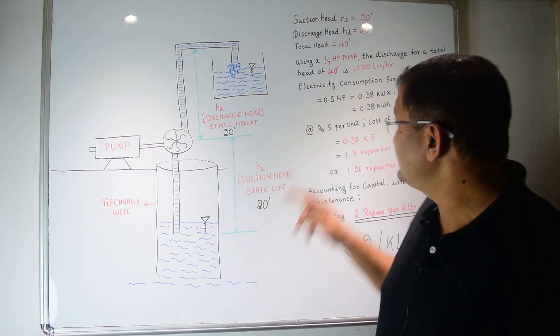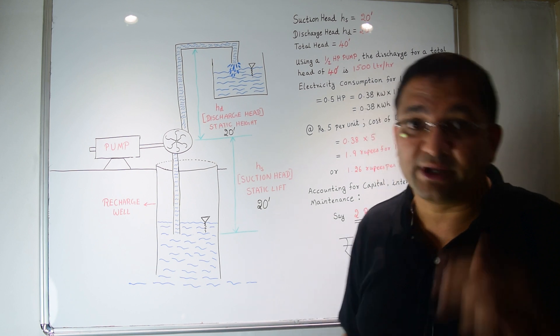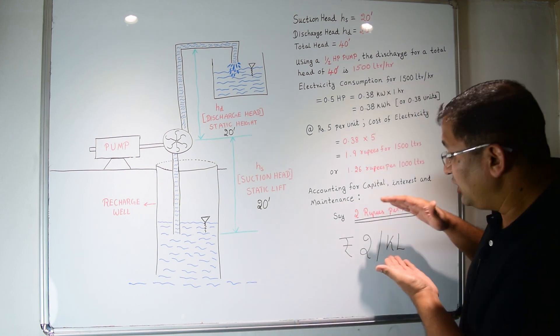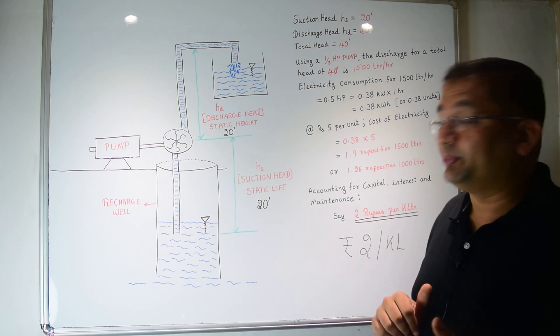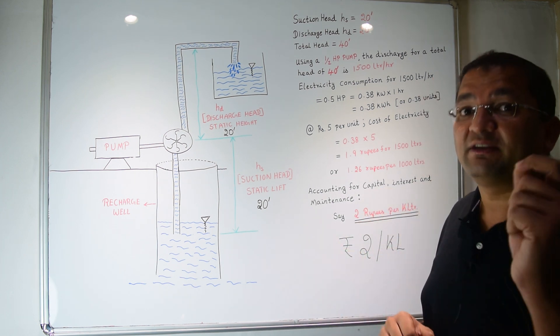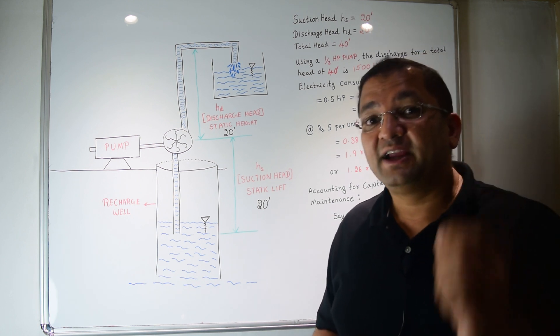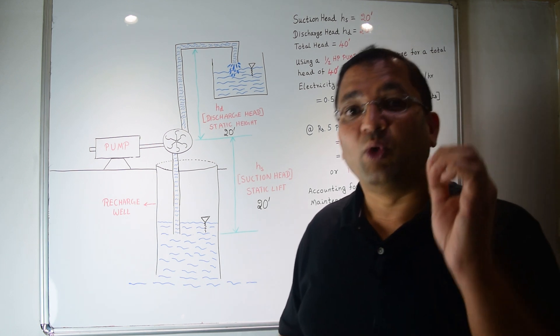In most cases, the cost of electricity is less than rupees 5. So this 2 rupees is on the conservative side. In reality, it will be even less than 2 rupees. So for about 2 rupees for every 1000 liters of water, we will get good clean water.